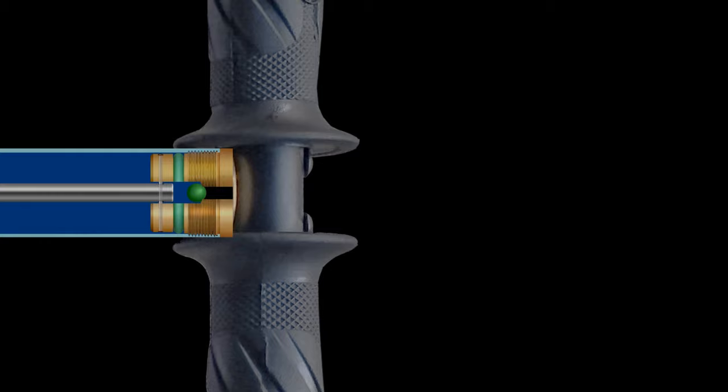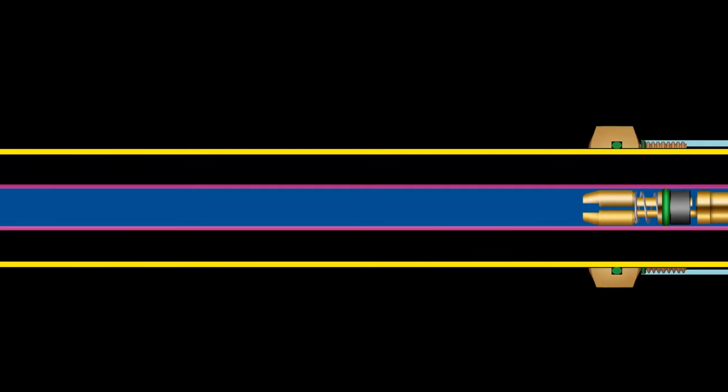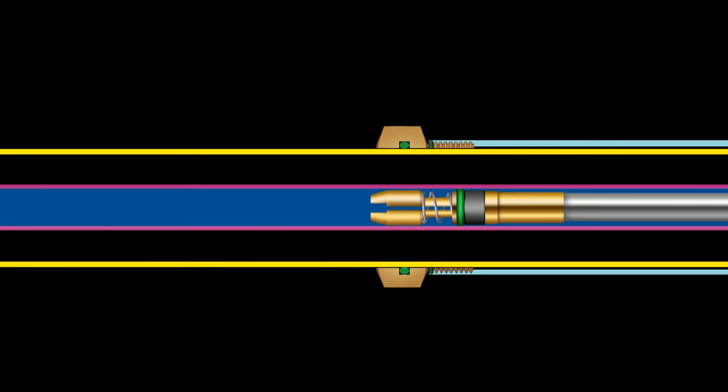When the handle is pushed, rubber ball closes the inlet hole. In the third tube, piston seal closes the air passage.